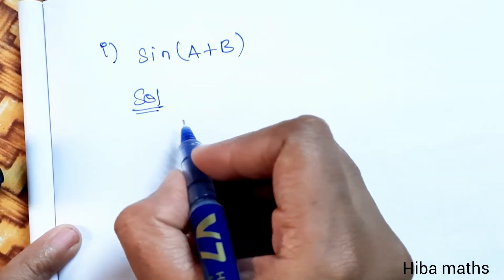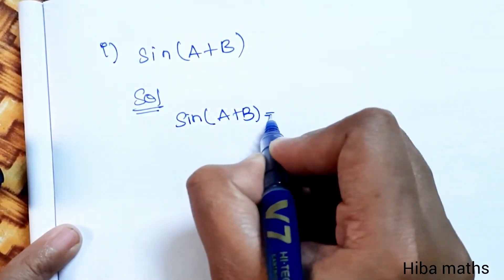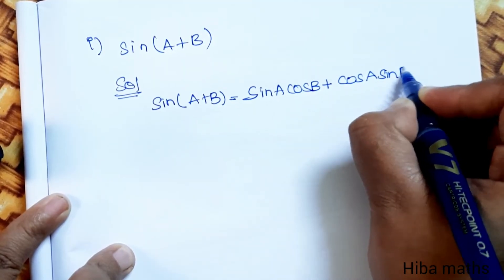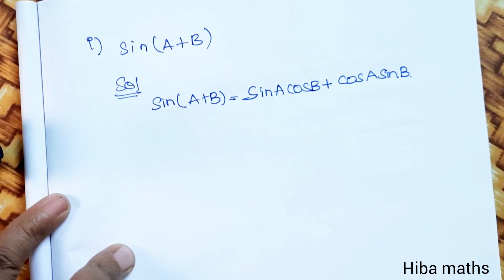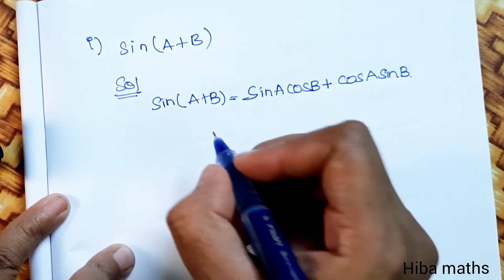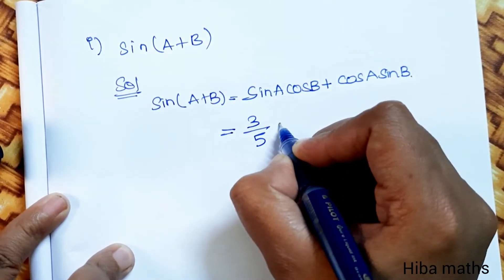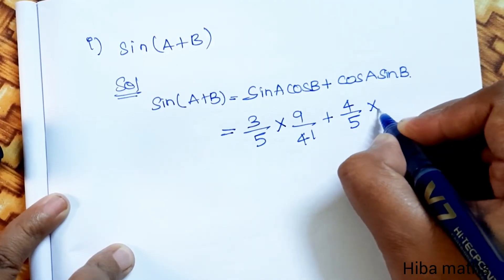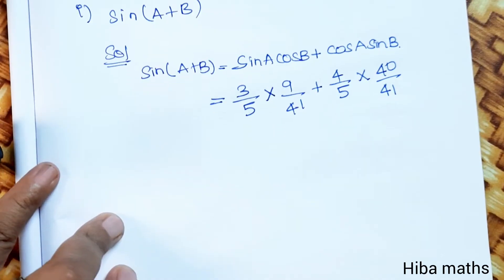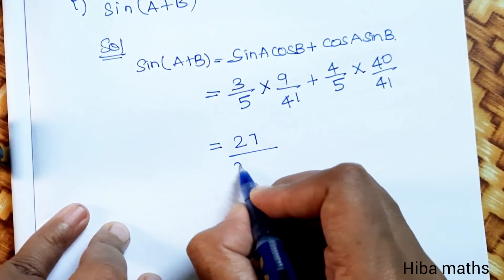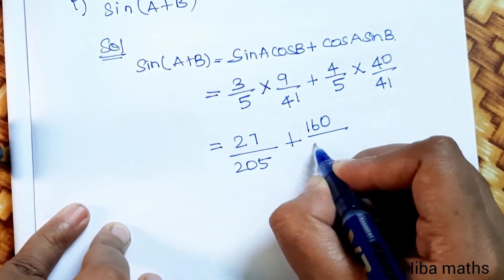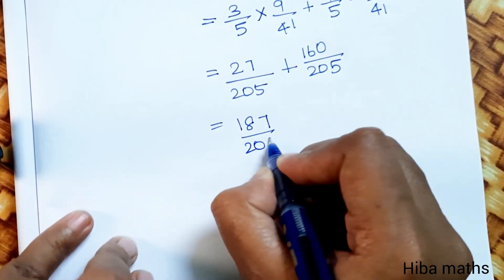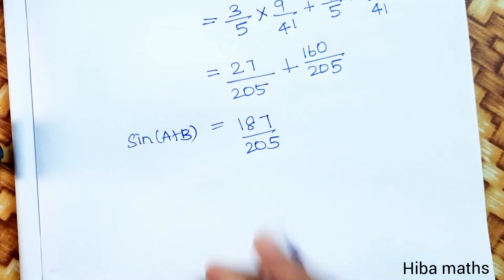First question: sin(A plus B). Using the formula sin(A plus B) equals sin A cos B plus cos A sin B. Substituting values: sin A is 3 by 5, cos B is 9 by 41, cos A is 4 by 5, sin B is 40 by 41. So we get 27 by 205 plus 160 by 205, which equals 187 by 205. This is the value of sin(A plus B).